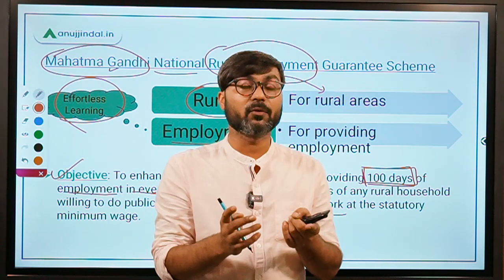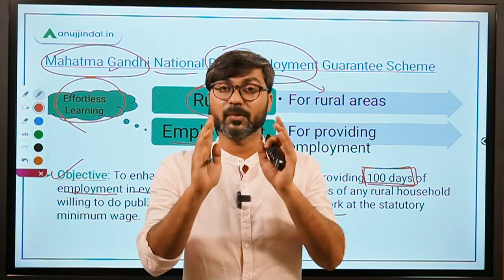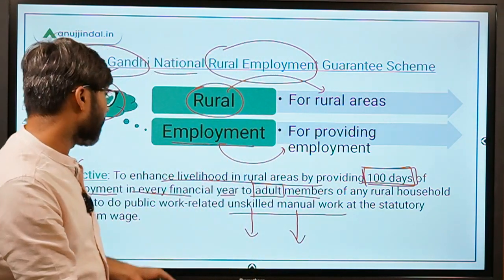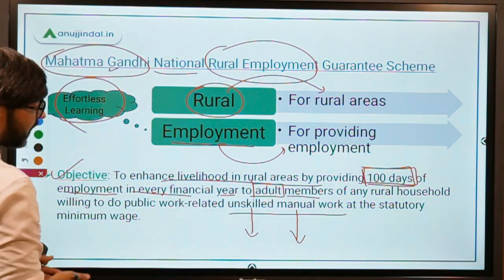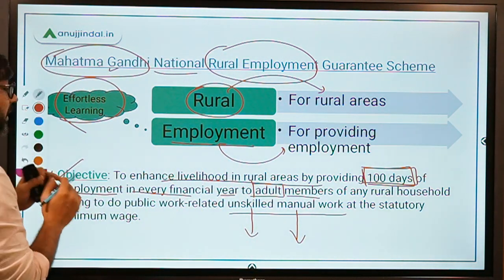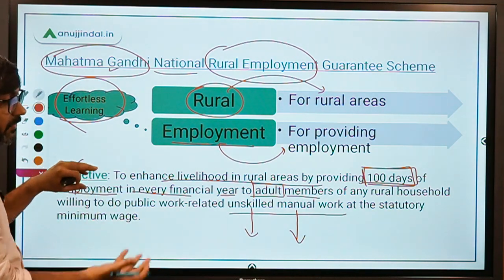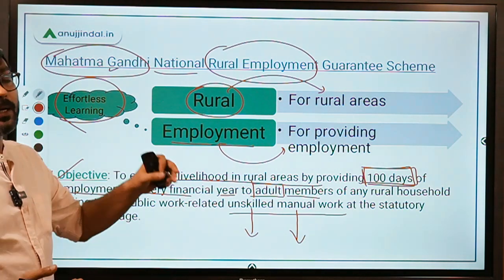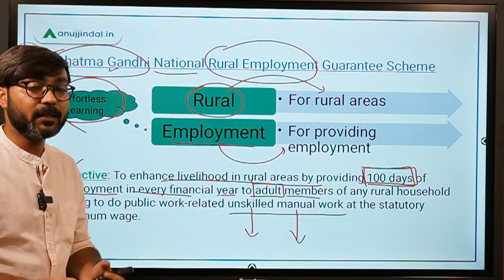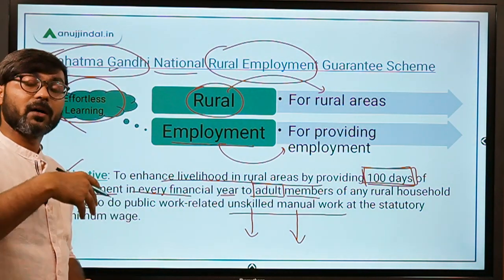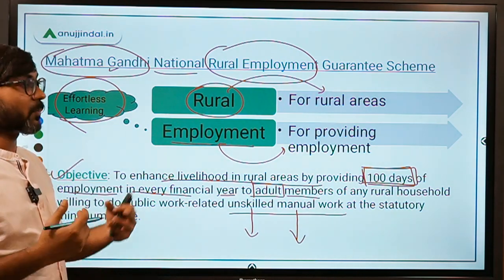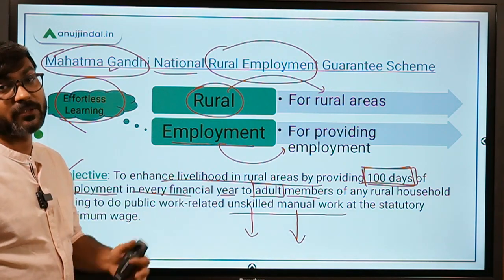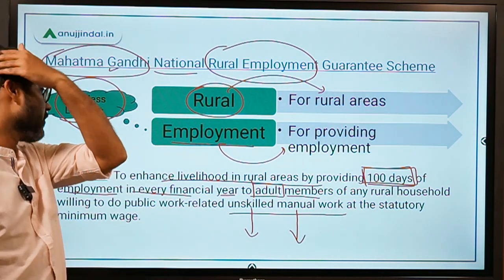So, 100 days of employment is provided to adult members of any family, and that work is unskilled and manual. The scheme we are talking about here is MNREGS. I hope the objective is clear.